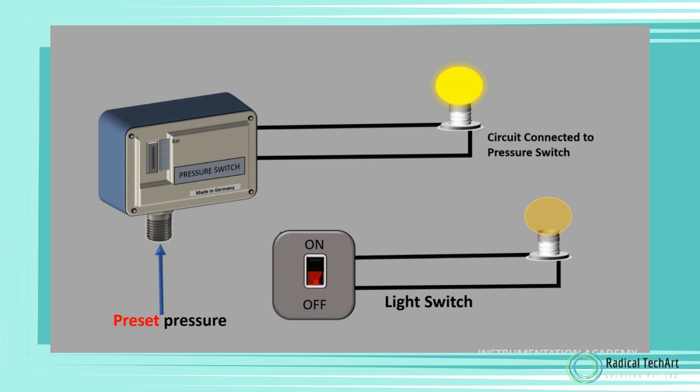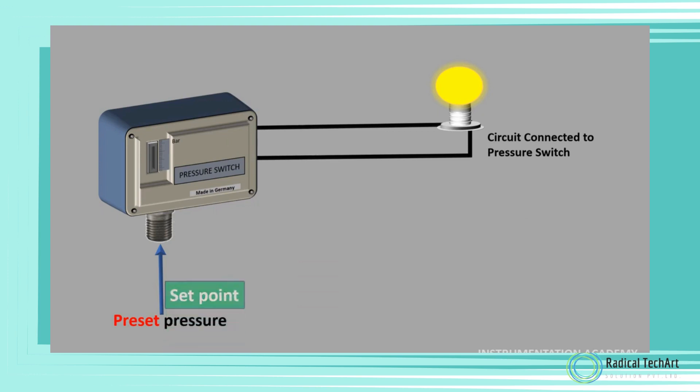In the case of a pressure switch, instead of being manually switched, the switch closes or opens the contact when the input pressure reaches above or below a preset value. This preset pressure is known as the setpoint of the pressure switch. The output of the pressure switch is digital, which means the output can have only two states: on or off.